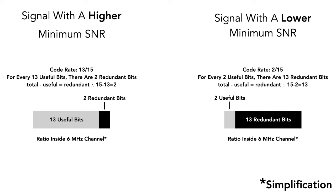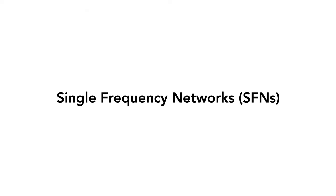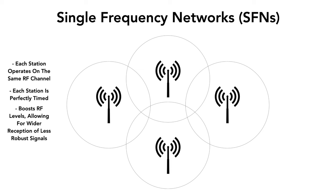If you're using a less robust modulation and code rate and want to boost RF levels so they're consistently strong in the area, you would use a single frequency network. With single frequency networks, you have a bunch of stations all operating on the same RF channel, timed perfectly to match up with one another to avoid destructive interference and actually boost the signal. By doing this, you boost RF levels in the area, which allows for wider reception of less robust signals.